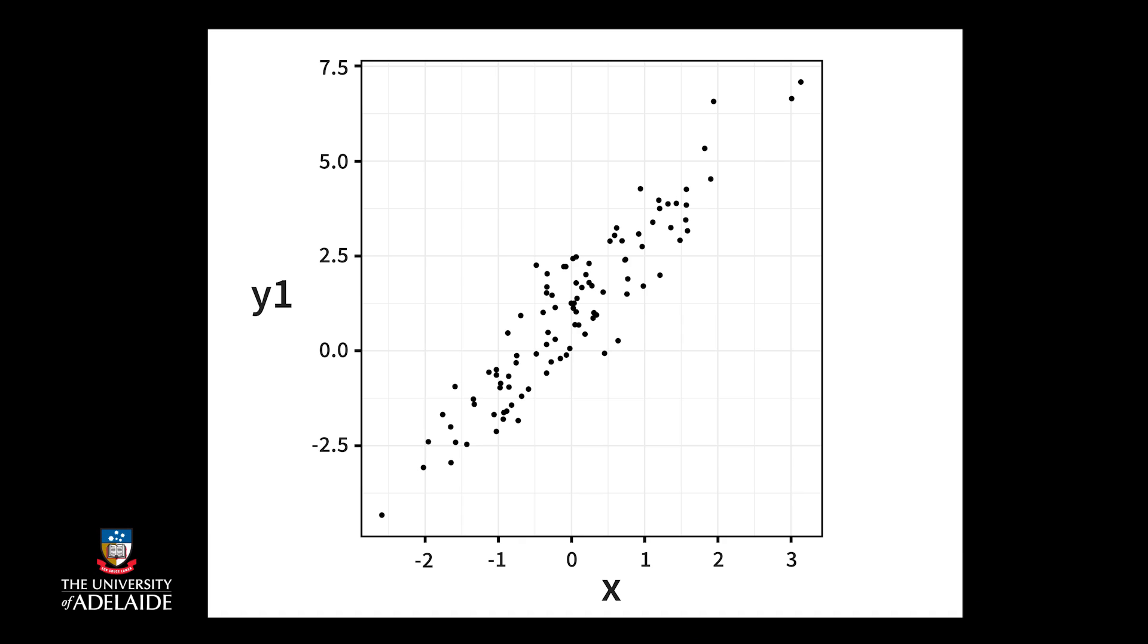To compare quantitative with quantitative, we use a scatter plot. But how do we describe this relationship?